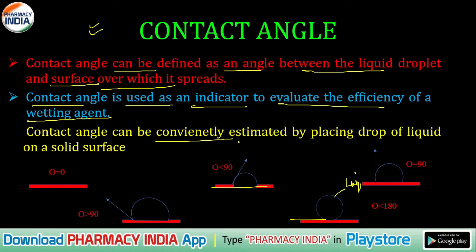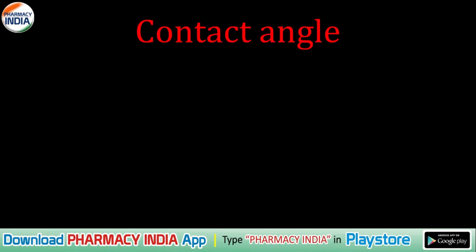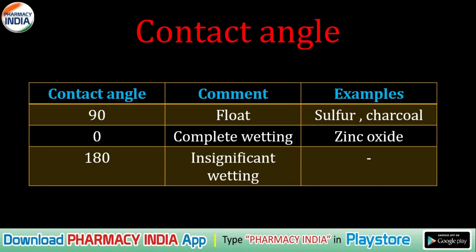The contact angle can be conveniently estimated by placing a drop of liquid on a solid surface. Simple — agar hum liquid ko solid surface par rakhte hain, to hum conveniently apne contact angle ko estimate kar sakte hain. So let's look at some examples.